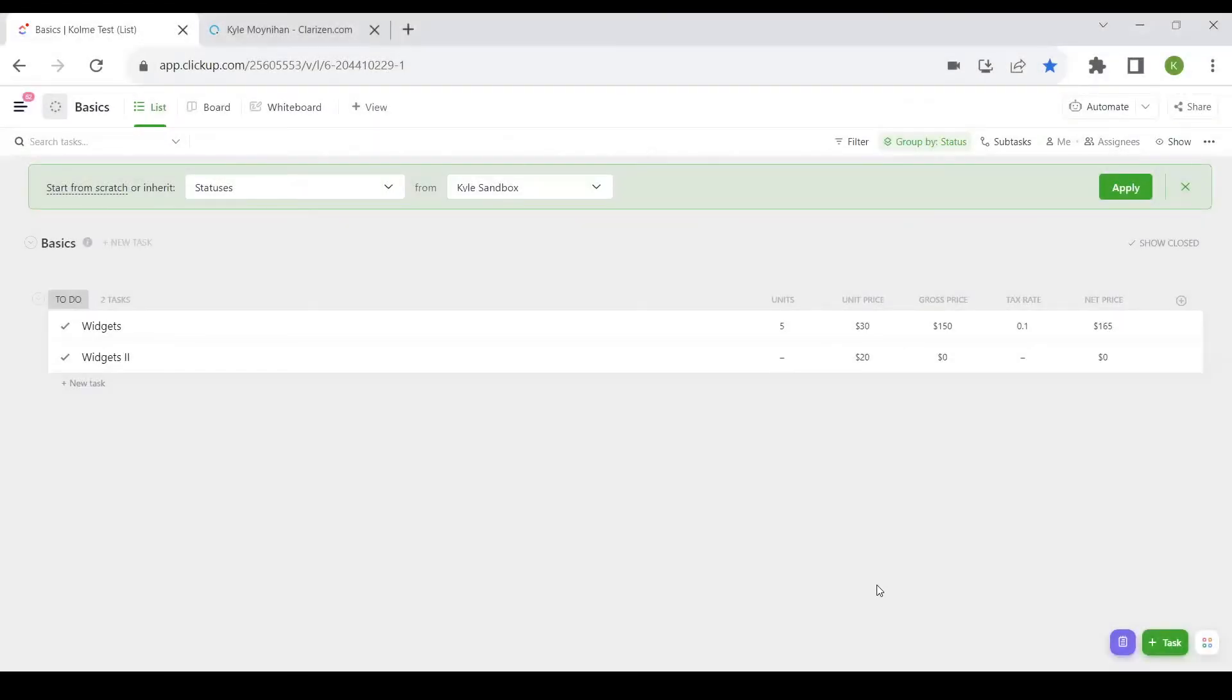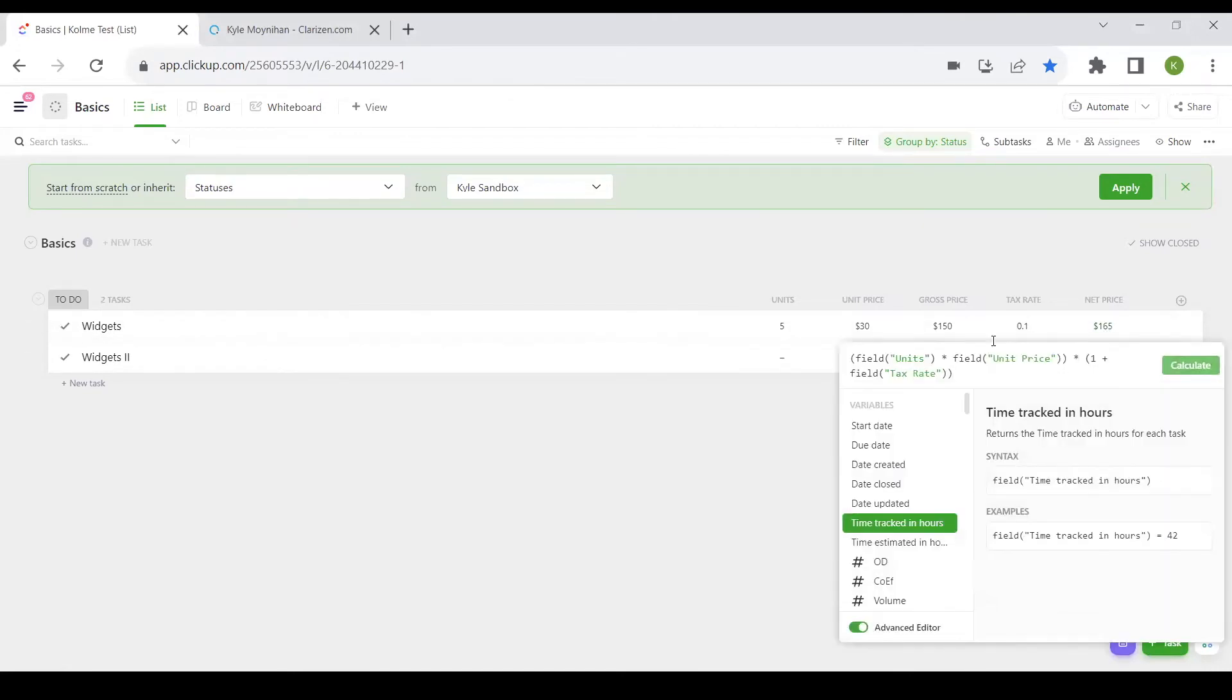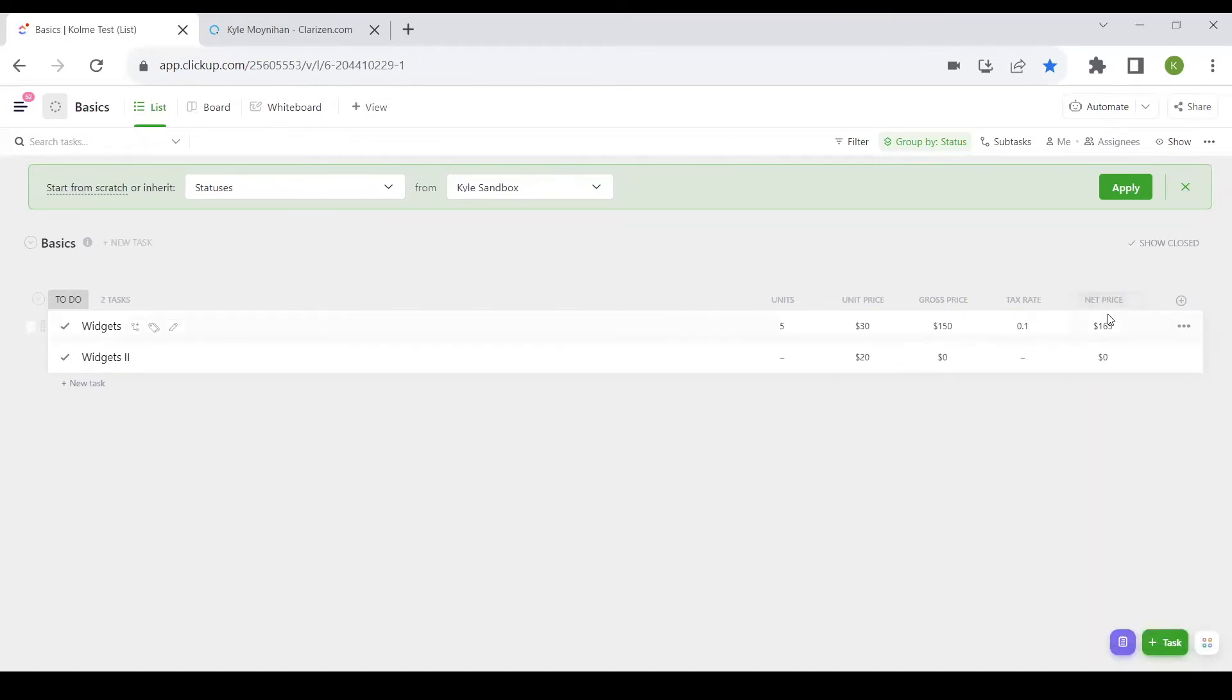If we come into our ClickUp and we click on net price, we will see that we have this somewhat more complicated mathematical equation where we start with an opening parentheses, and then we have units times unit price. We close off that parentheses, and then we multiply that by our tax multiplier, which is opening up a new parenthetical statement. One plus the tax rate, close that off, and that's what gives us the ability to calculate our net price.